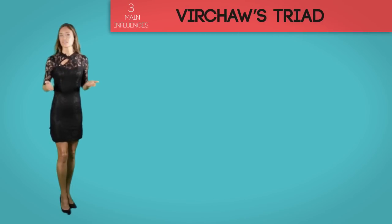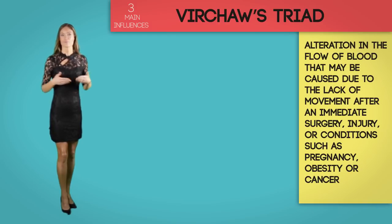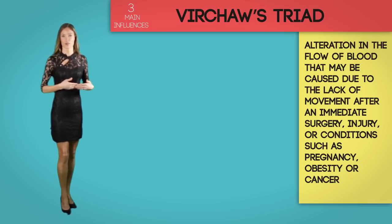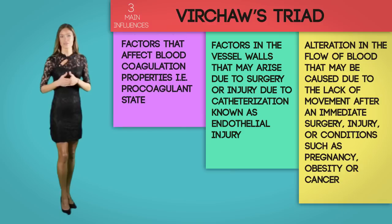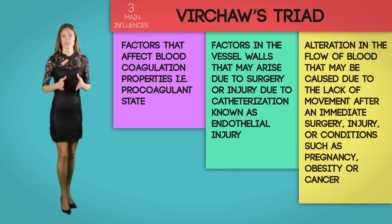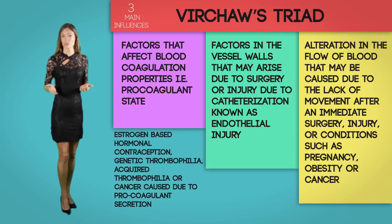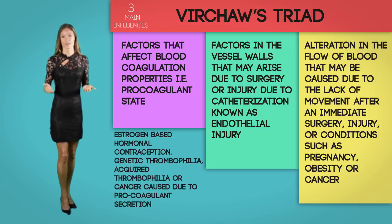Three main influences increase the chance of thrombus formation, known as Virchow's Triad. These include: alteration in blood flow caused by lack of movement after surgery, injury, or conditions such as pregnancy, obesity, or cancer; factors in the vessel wall arising from surgery, injury, or catheterization, known as endothelial injury; and factors affecting blood coagulation, such as a procoagulant state — including estrogen-based hormonal contraceptives, genetic thrombophilia, acquired thrombophilia, or cancer-caused procoagulant secretion.